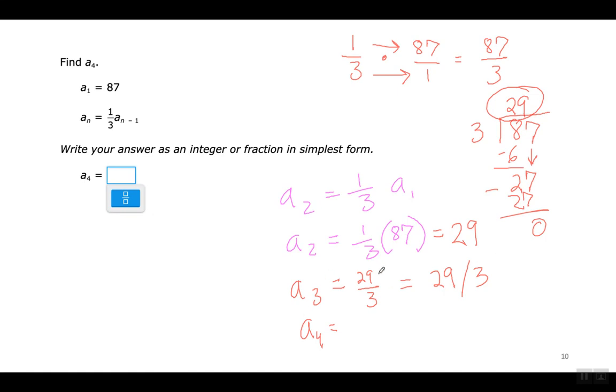I left it like that because if you divide 29 by 3, you get a decimal. So to not get a decimal, I can just leave it in fraction form.